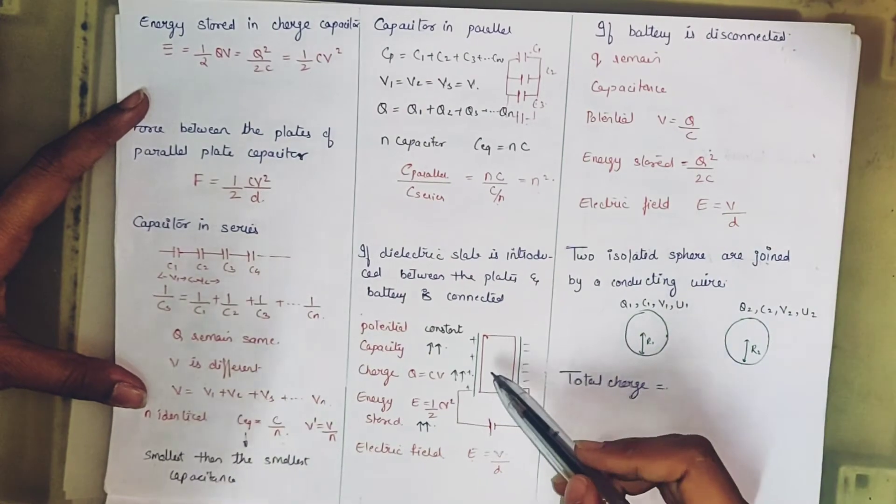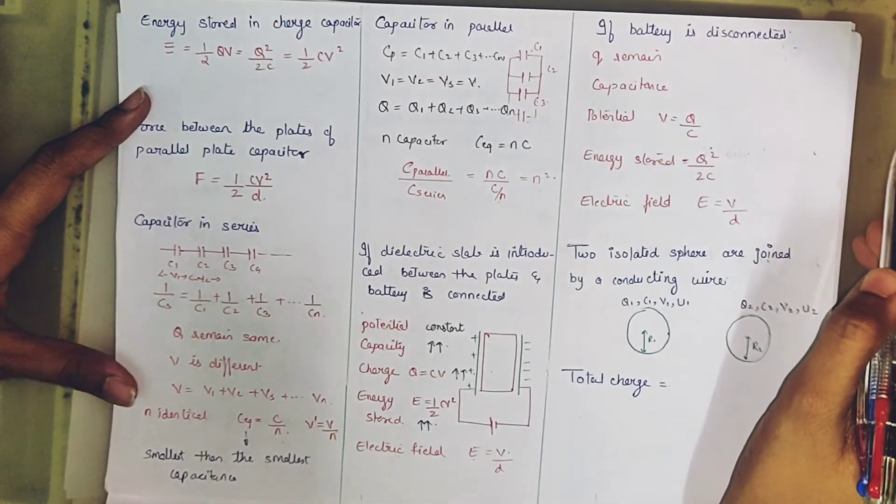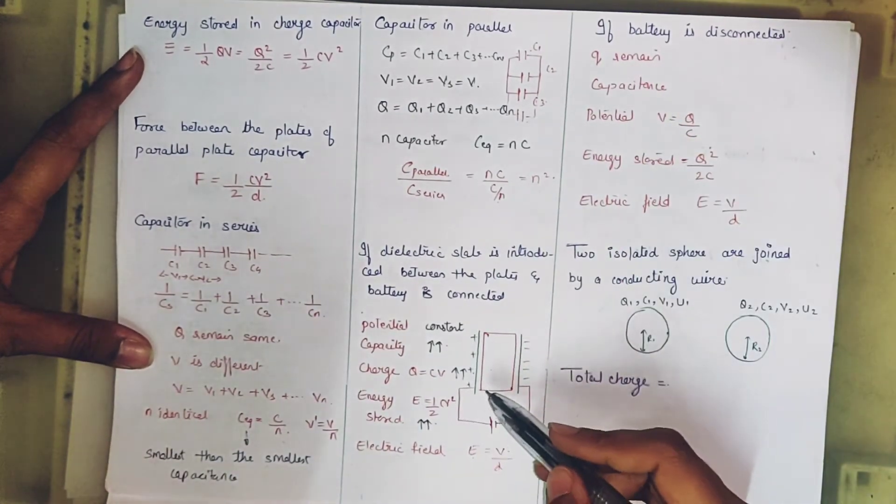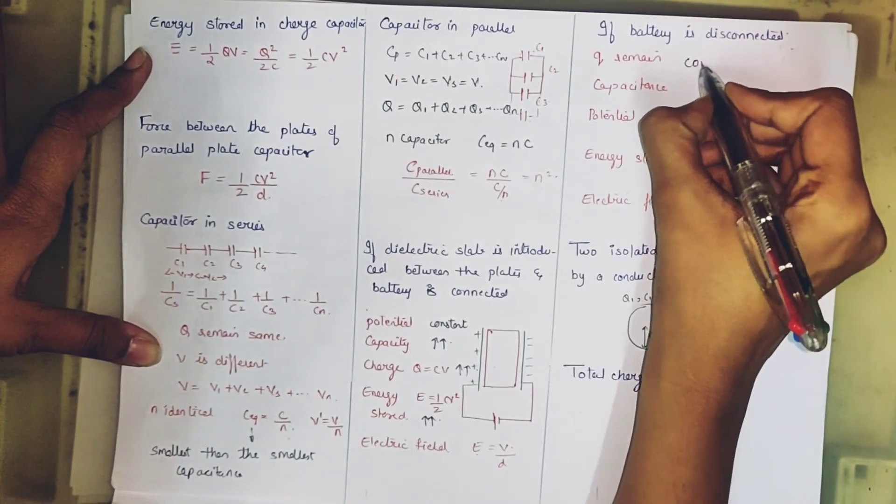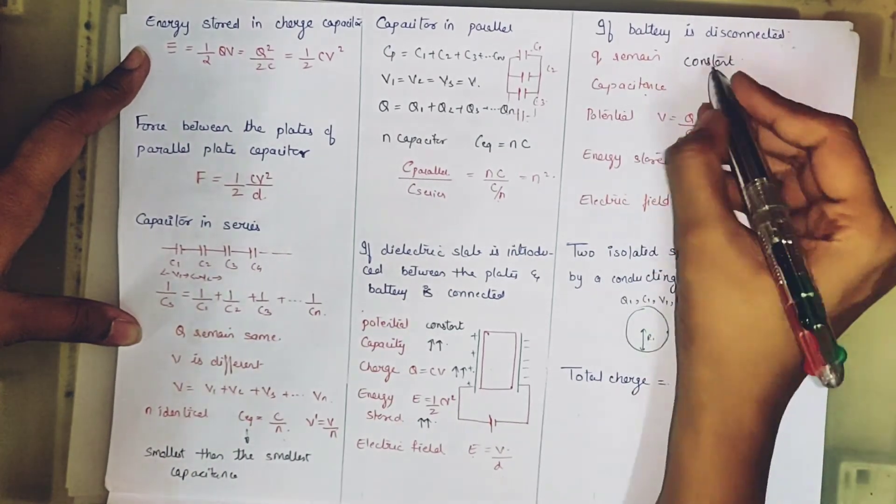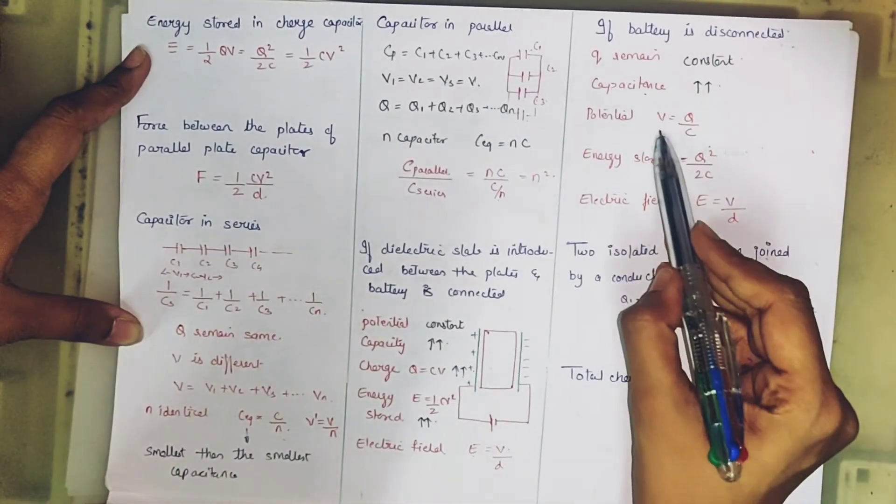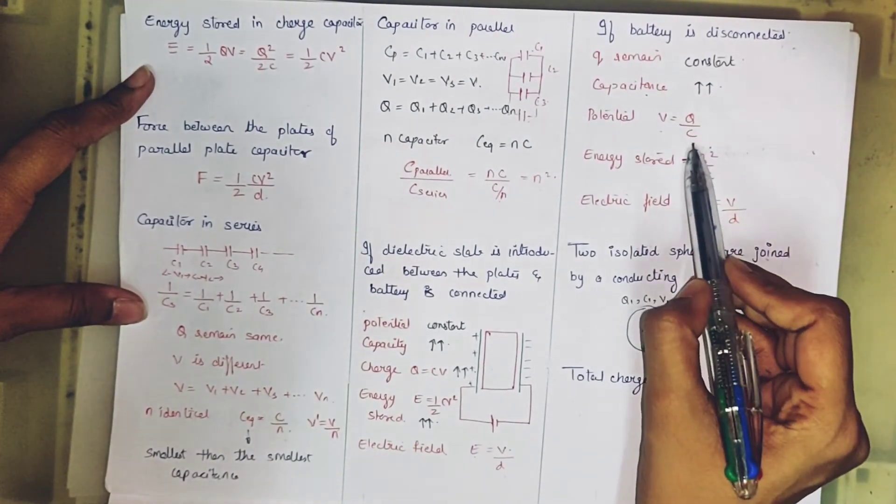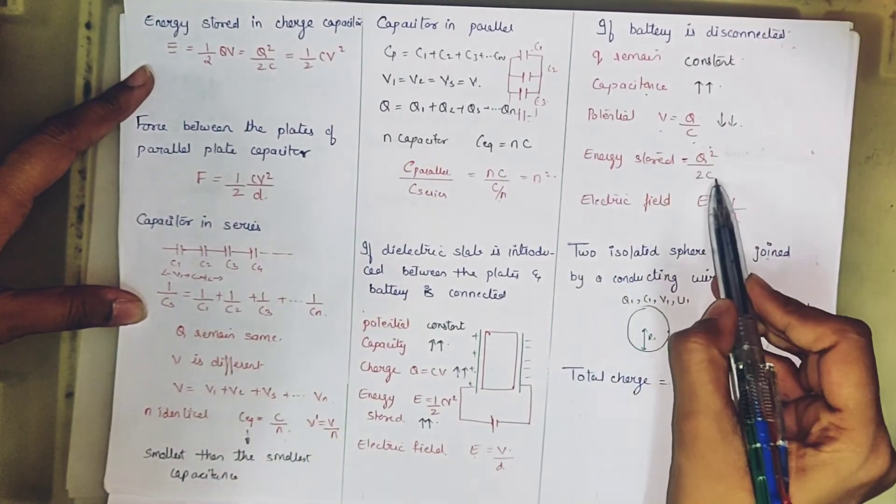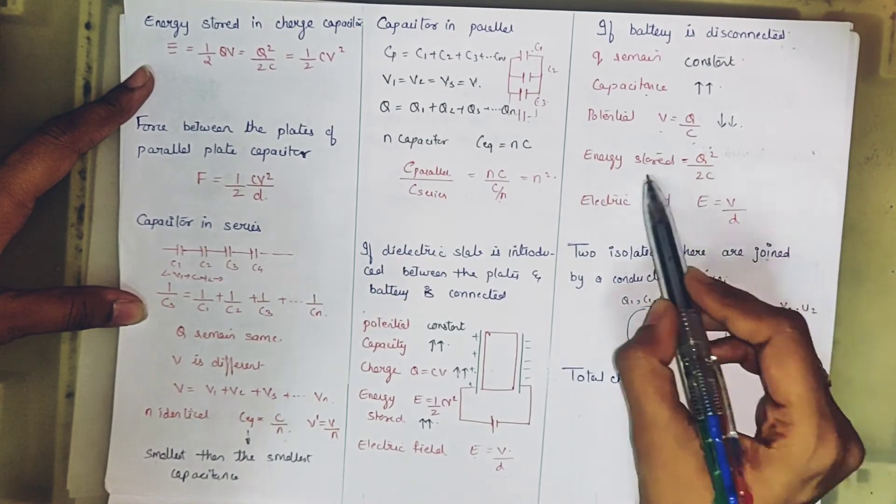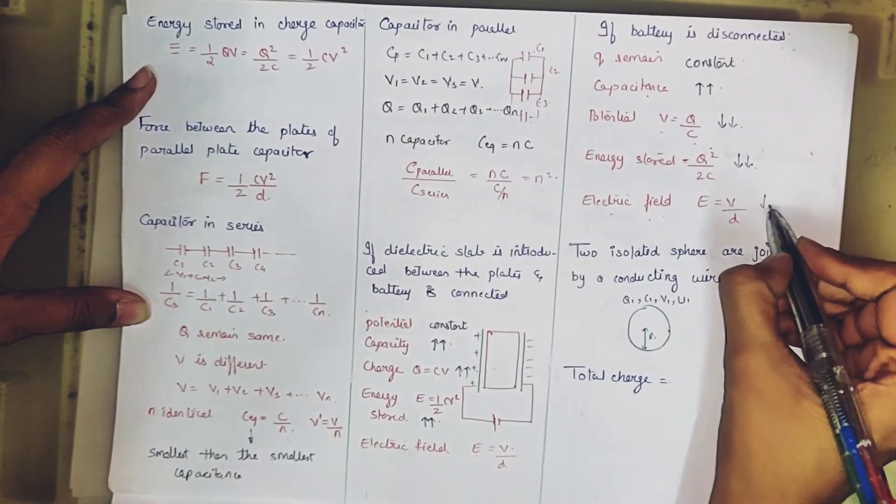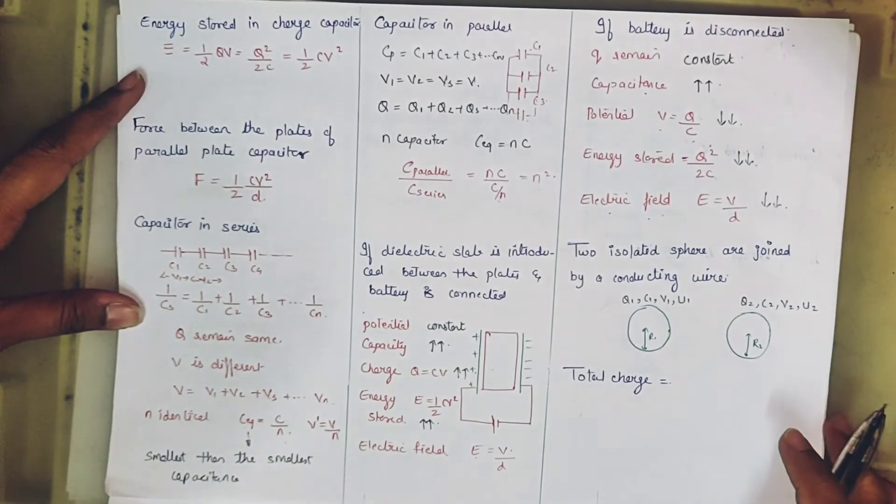Now what is the next case? We have said that we have put a dielectric slab on it, but we have to disconnect the battery. If our battery is gone, what will happen here? Now where the charge was taken, the source has been lost. So Q will remain constant. After that, what will happen with the capacitance? If the capacitance is increasing with the dielectric field, then this will increase. Then V is Q by C. Q is constant but C increases, so potential will decrease. Next, energy stored is Q square by 2C. Again Q is constant but C is increasing, so energy stored will decrease. Next, electric field. V is decreasing, so electric field will also decrease. This you have to directly remember for MCQs.